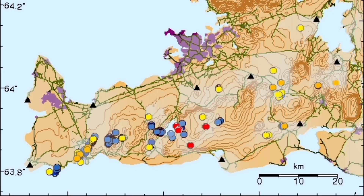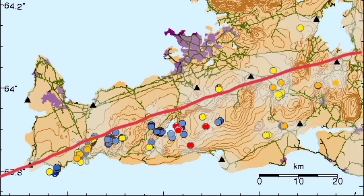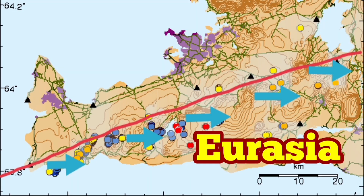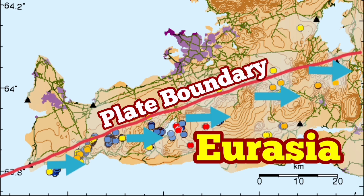The earthquakes, as I mentioned, are like a shaking of a ketchup bottle — it makes it possible to flow. When we plot these earthquakes, we see that the pull is toward Eurasia, from Eurasia. That is a plate boundary.